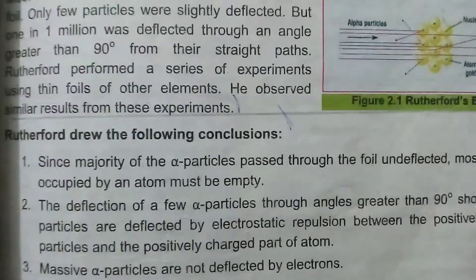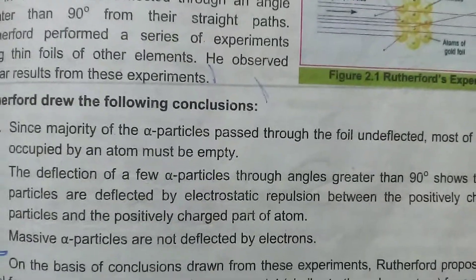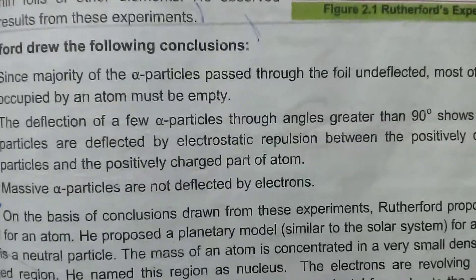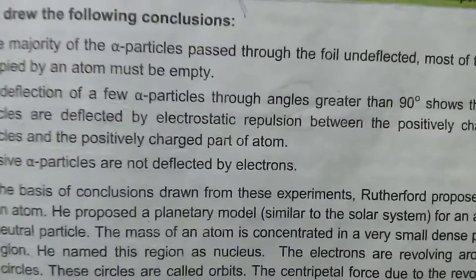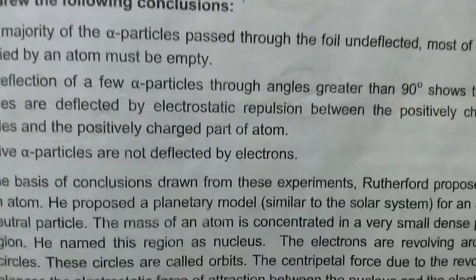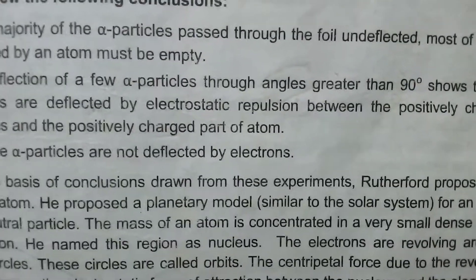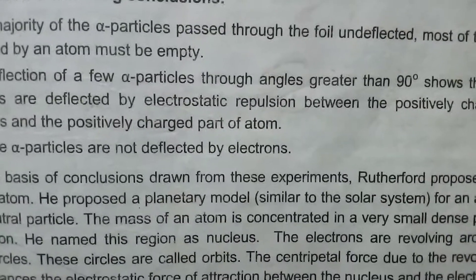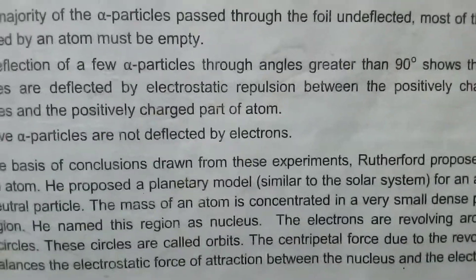However, there were some defects in Rutherford's model. The first defect: classical physics suggests that a revolving electron will continuously emit energy. As the electron loses energy, its orbit becomes smaller and smaller until it would eventually fall into the nucleus, which would cause the atomic structure to collapse. But this does not actually happen.